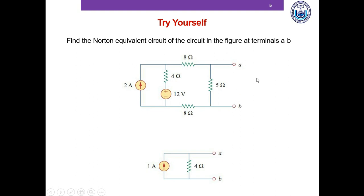To determine the current you can use nodal analysis, mesh analysis, source transformation, superposition theorem — whatever you like. And the Norton current is 1A.